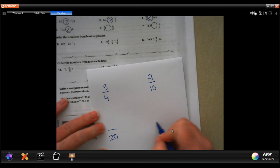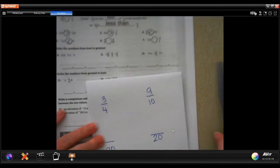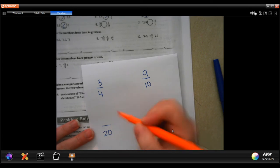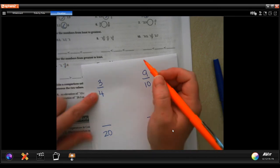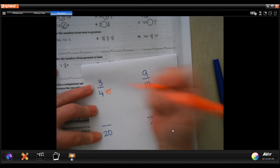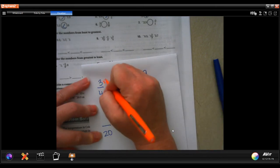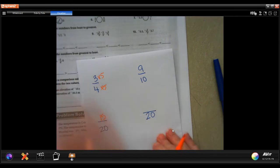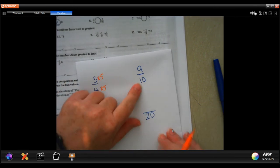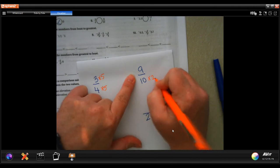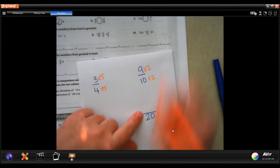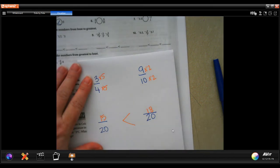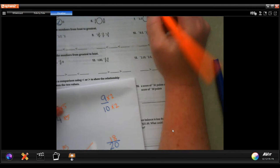So 3 fourths and 9 tenths. Well, the smallest number they're both going to go into is going to be 20. So that's going to be my new denominator. So now I know that whatever I do at the bottom to make it 20, I have to do the same thing for the top. So 4 times 5 is 20. So now I need to multiply the top by 5. 3 times 5, 15. 10, I need to multiply it by 2 to get 20. So I'm going to multiply the 9 by 2 and get 18. Now 18 is bigger than 15, makes that one bigger. So 9 tenths is bigger.